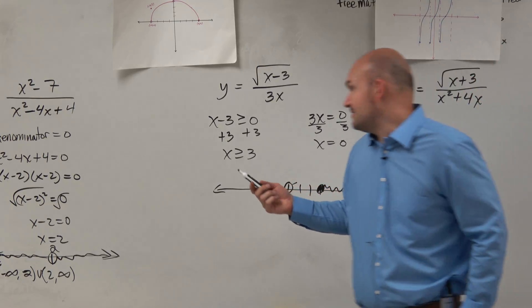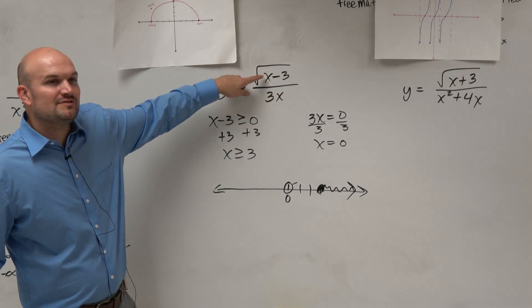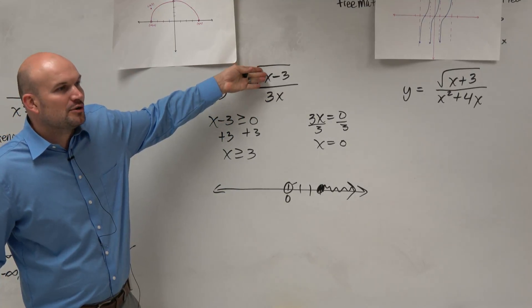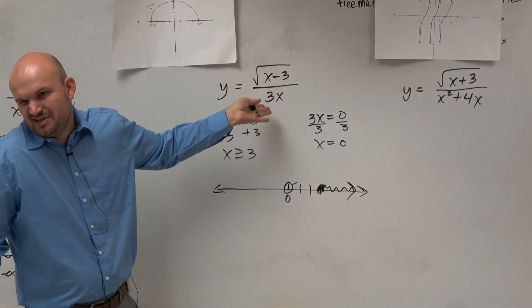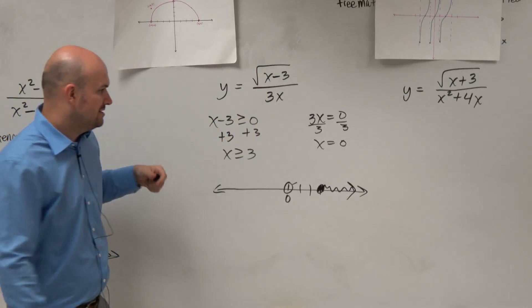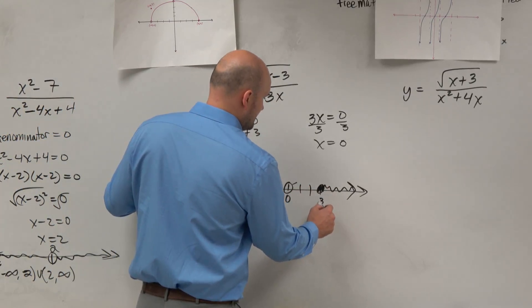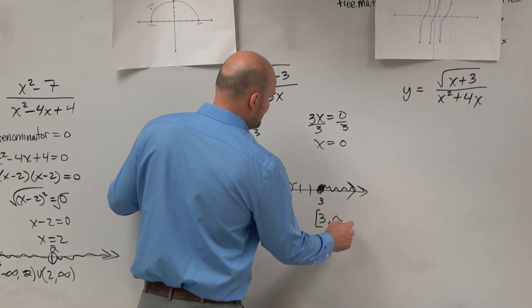It's not defined for the radical anyways. You can't even have 0 in here, because look at what happens if you put 0 under that radical. 0 minus 3 is negative 3, right? So 0 doesn't work for both of them anyways. So our domain is just going to be from 3 to infinity.